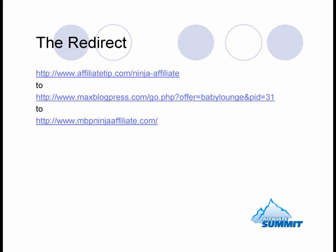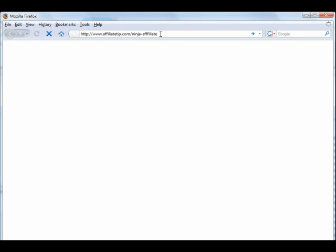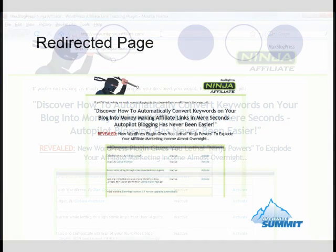This is the path of what the redirect happens in the case of the file I created. I put it up on affiliatetip.com, so the URL for the actual affiliate link I'd use in a blog post or email signature is affiliatetip.com slash ninja-affiliate. As you can see, the link below it is about 30% or more longer — it's maxblogpress.com slash go.php question mark offer equals baby lounge, which is my username on ClickBank, ampersand PID equals 31. You're able to circumvent all that gobbledygook. The server redirects slash ninja-affiliate to the affiliate link, which then bounces over to mbpninjaaffiliate.com — the ultimate landing page. That's the landing page you end up on.